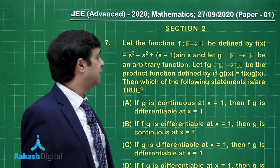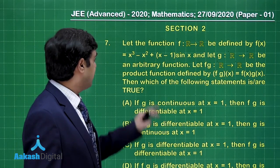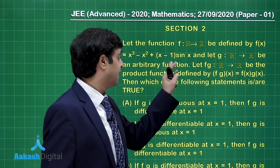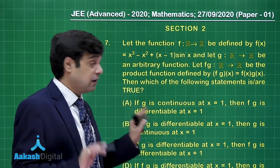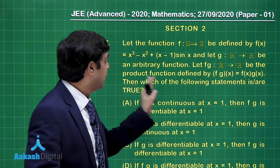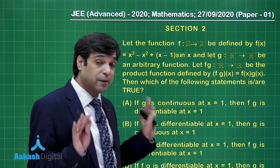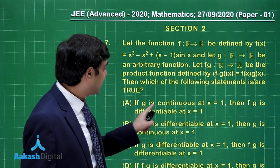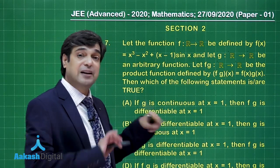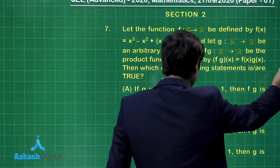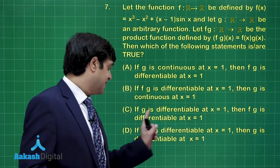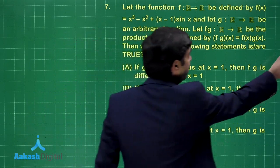Moving forward, let's take up question number seven. Let the function f be defined by f(x) = (x³ - x² + x - 1)·sin(x), and g be any arbitrary function. The product fg is f(x)·g(x). Which of the following statements are true? If g is continuous at x=1, then fg is differentiable; if fg is differentiable, then g is continuous; if g is differentiable at x=1, then fg is differentiable; if fg is differentiable at x=1, then g is differentiable.